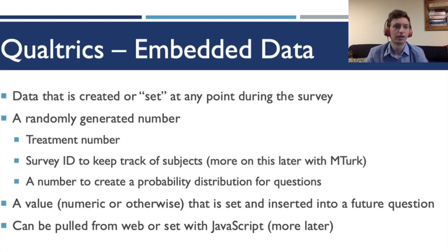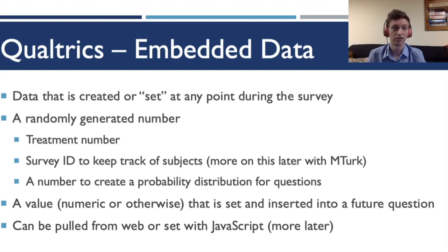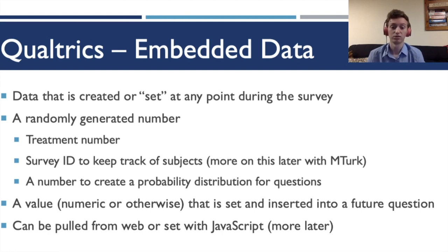Now let's talk about embedded data, which is a really powerful way to turn a typical survey into more of an experiment. Embedded data can be anything — text, a number, a treatment number, or a survey ID to keep track of respondents. It can also be used within the survey itself. For example, we said this survey asks you to guess a randomly generated number: we'll store that number in embedded data, and when participants guess, compare their guess to the embedded data — if correct, show 'you are correct'; if not, say 'sorry, you didn't get it.'